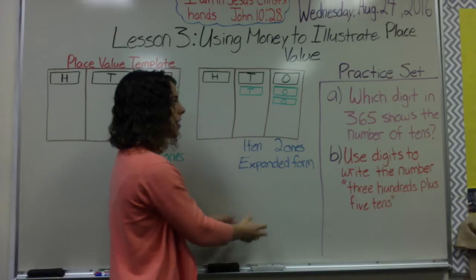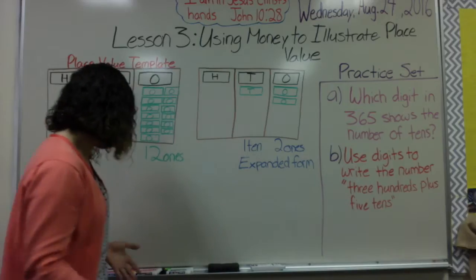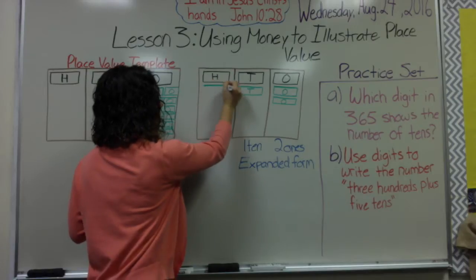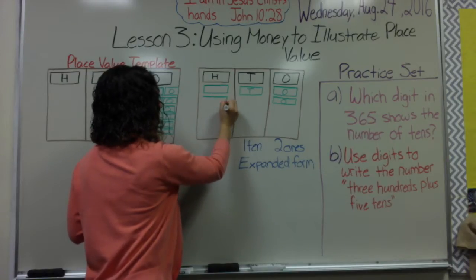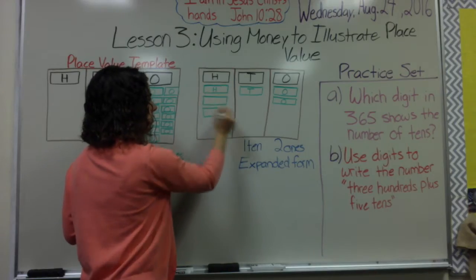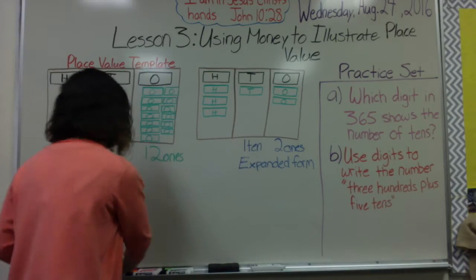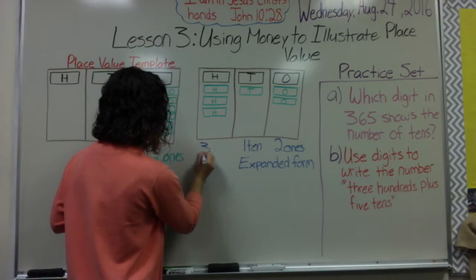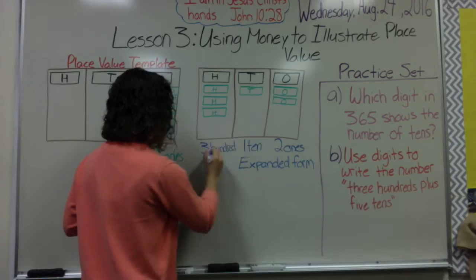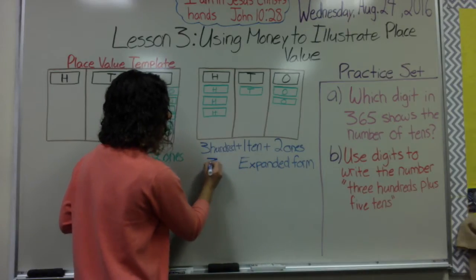I'm simply breaking apart each place value and writing how many I have. In my ones column I have two ones, and in the tens column I have one ten. What if I were to add three bills in my hundreds place? If I added three hundred-dollar bills, I now have three hundred twelve.